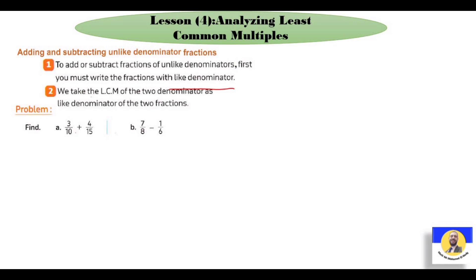نشوف معنا example. How can we solve it? معنا two questions: 3 over 10 plus 4 over 15، و 7 over 8 minus 1 over 6. The first: 3 over 10 plus 4 over 15. نقدر نعملهم plus؟ لأ، لأنهم عندهم unlike denominator - الـ denominator هنا ten وهنا fifteen.